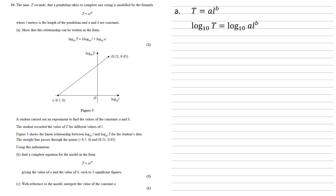So by the rules of logarithms, we can split this up into an addition of logs. So the right hand side becomes log base 10 l to the b plus log base 10 a. And when we've got a power inside a logarithm, again, by the rules of logarithms, we can bring this power out as a multiple.